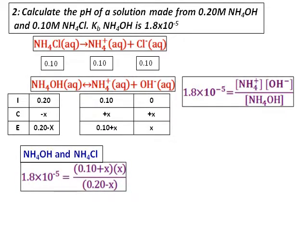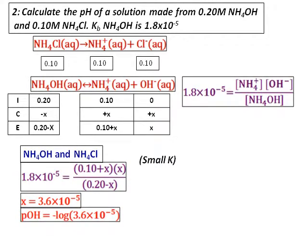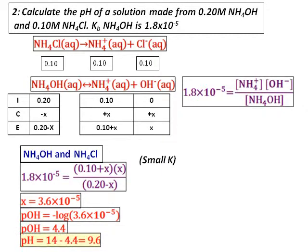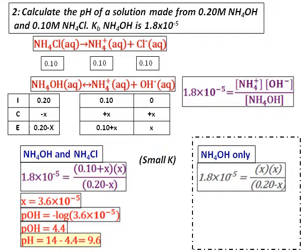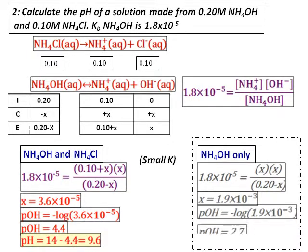After setting up the ICE table and substituting into the Kb equation, here it is the hydroxyl ion which is produced. Therefore, you get pOH, and then from pOH you get pH, which comes out as 9.6. Just like the previous case, let us see what happens if we have only ammonium hydroxide. When we have only ammonium hydroxide, the concentration of hydroxide ion is more, and therefore the pH is also more.